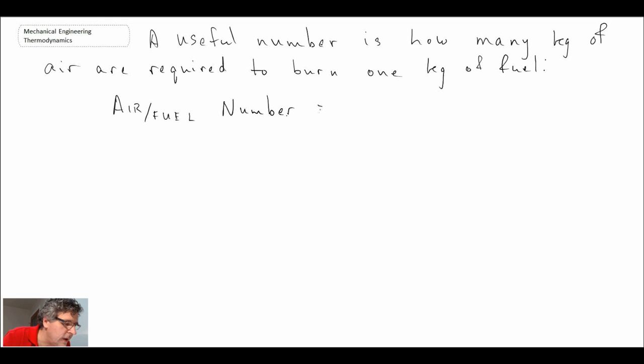The air-to-fuel number is basically the mass of air being combusted divided by the mass of fuel. That's pretty straightforward. Now for methane, we looked at an oxidation reaction just a moment ago.